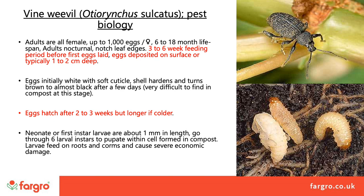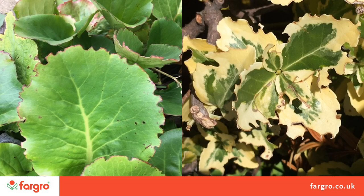In the top right-hand picture we can see an adult female vine weevil, and in the lower picture we can see the larvae with their distinctive brown heads and C-shape, as well as one that is pupating. On the left we can see typical feeding damage on the leaf edges caused by the adults on Bergenia, and on the right on Euonymus — both favourite plants for this pest to feed on.